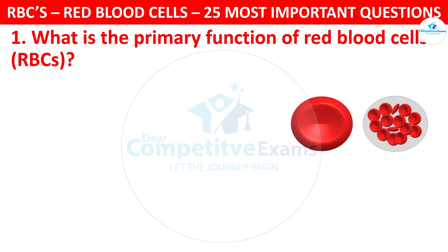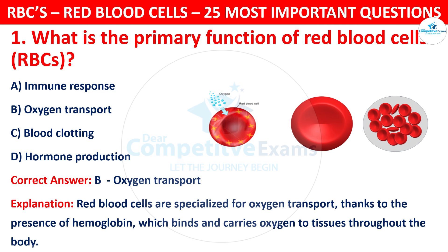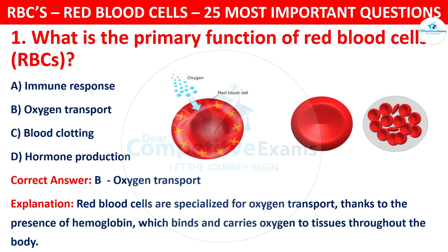Question 1. What is the primary function of red blood cells, RBCs? The options are: immune response, oxygen transport, blood clotting, or hormone production. The correct answer is B, that is oxygen transport. Red blood cells are specialized for oxygen transport, thanks to the presence of hemoglobin, which binds and carries oxygen to tissues throughout the body.